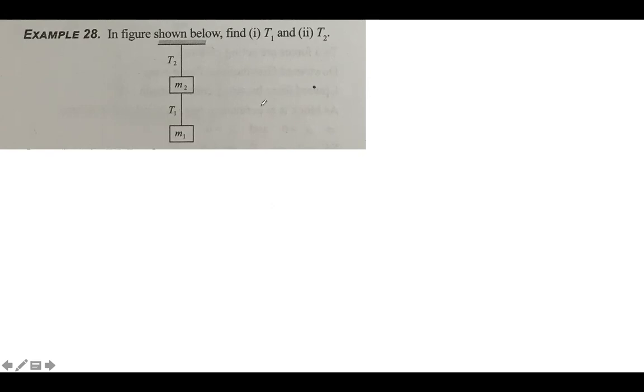Yesterday we discussed that tension in a string remains constant if there is no mass attached to it. The criteria for tension to be the same throughout is that the string should be massless and no mass should be attached between the strings. In this case, the string has a mass attached between the upper and lower parts, so the tension T1 in the lower part will be different from T2 in the upper part.